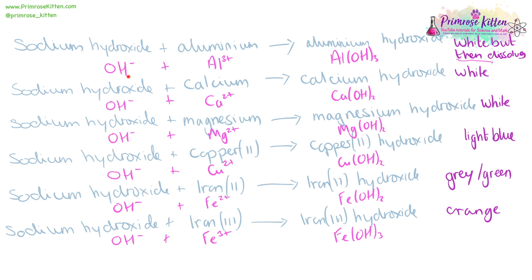For the ionic equations, we have our hydroxide ion and then our metal ions, and you are expected to know all of these. You just need to make sure the number of negative hydroxide ions equals the number of positive ions. So aluminium is 3+, so it needs three negative ions to become neutral overall. Calcium is 2+, so it needs two negative ions to become neutral overall. The formulae are: Mg(OH)₂, Ca(OH)₂, Fe(OH)₂, and Fe(OH)₃.